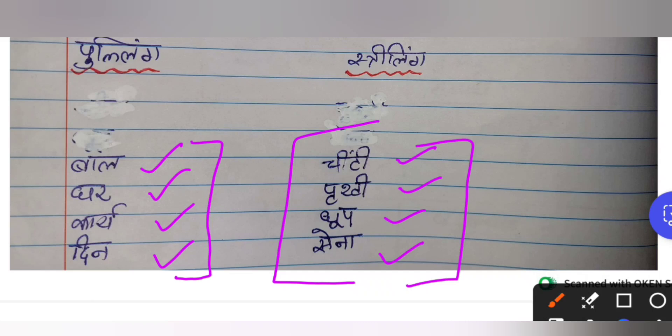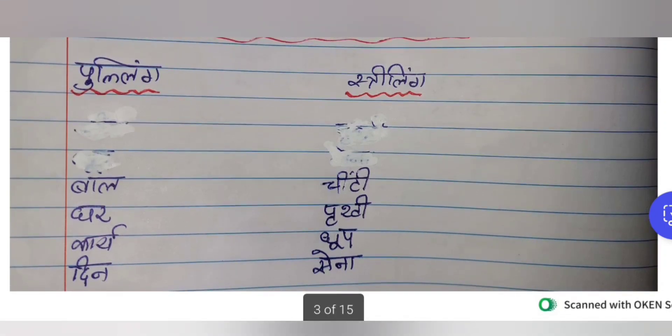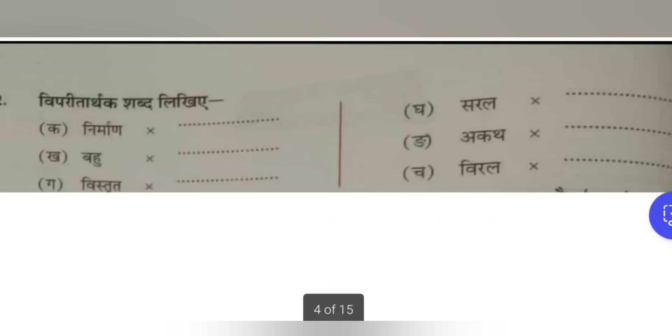As I said, there are a few set of rules which we have to understand — for example, river names are striling, mountain names are pulling. We have to check that video to understand how the segregation works. For now, understand: Bal, Ghar, Kariya, Din are pulling; Chinti, Prithvi, Dhoop, Sena are striling shabdas.